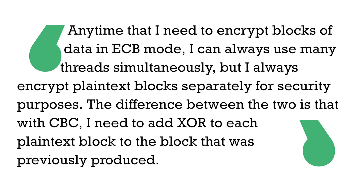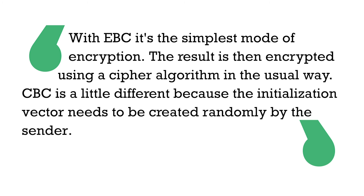The hiring manager wants to know if you understand the differences between ECB and CBC. They may ask whether ciphertext blocks are decrypted separately, whether you can encrypt and decrypt simultaneous threads, or how an image can be encrypted. In my answer: in ECB mode I can use many threads simultaneously but always encrypt plaintext blocks separately for security. The difference with CBC is that I need to XOR each plaintext block with the previously produced block, whereas ECB is the simplest mode. In CBC, the initialization vector must be created randomly by the sender.